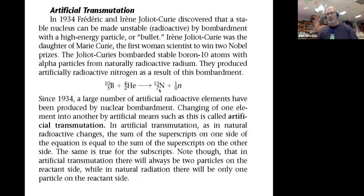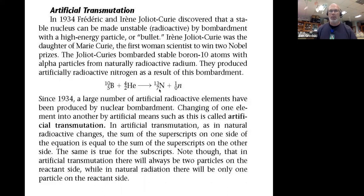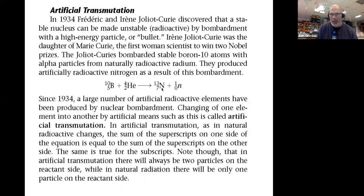Here's another Curie — a daughter of Marie Curie. I think there are five Nobel Prizes in the Curie family. She discovered that a stable nucleus can be made unstable by bombardment of a high-energy particle — a bullet. Alpha particles bombarding boron made nitrogen — a brand new element — and produced a neutron. This neutron being released can be fired at a fissionable material — a very large, unstable atom with too many protons whose binding energy can't really keep it together.